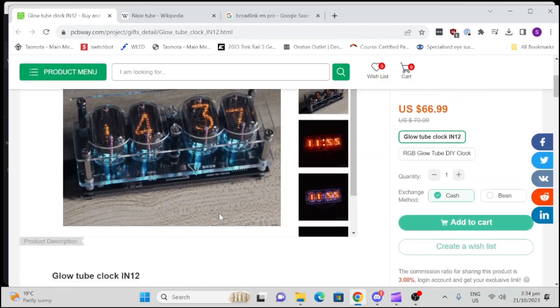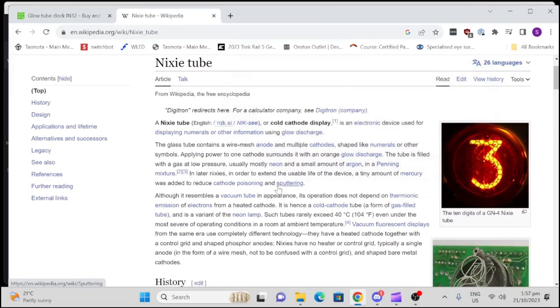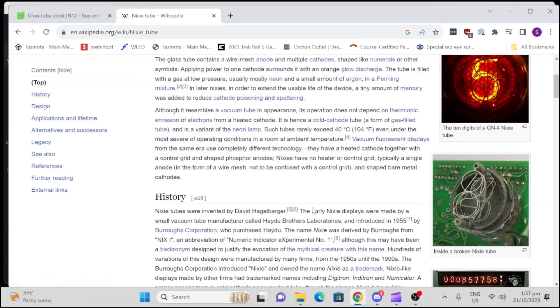Nixie tubes are beautiful devices. They are tubes with a cold cathode display - effectively they have the numbers made in metal with a gas inside, some type of neon gas. They've got this sort of 3D effect as it goes through the numbers because they're one in front of the others. I think it's an absolutely amazing looking device.